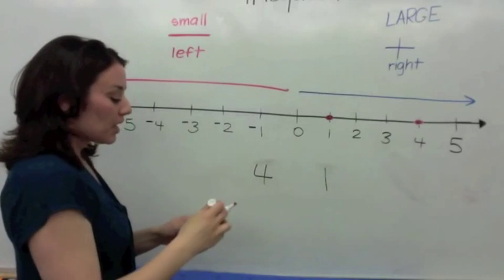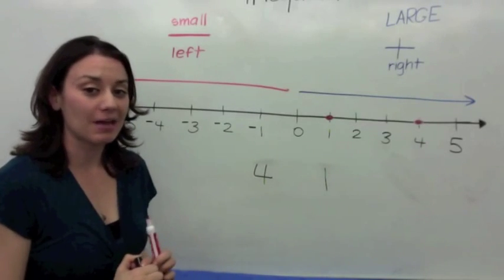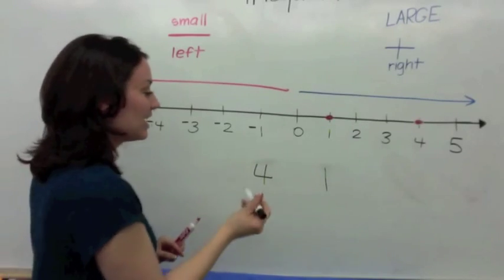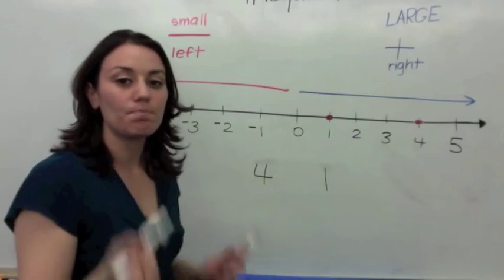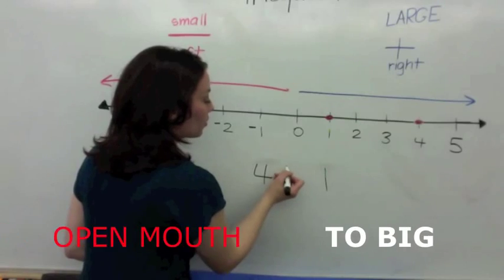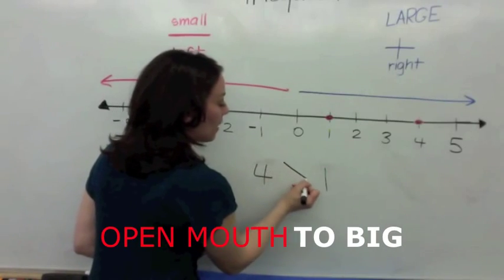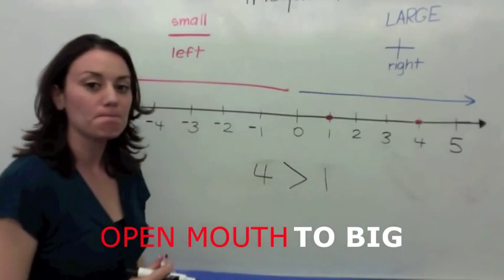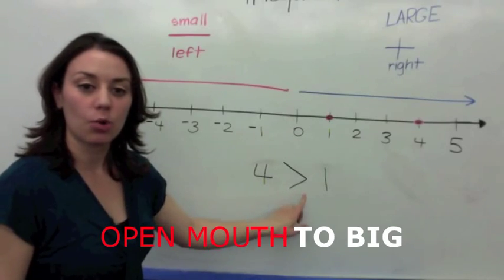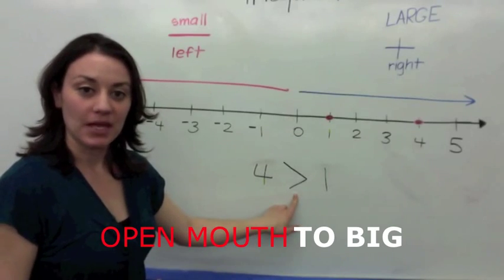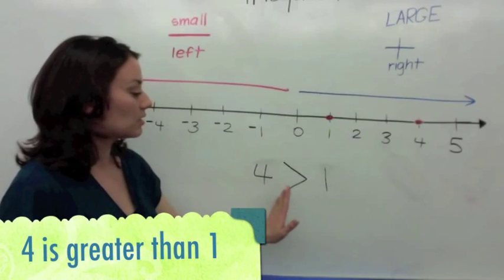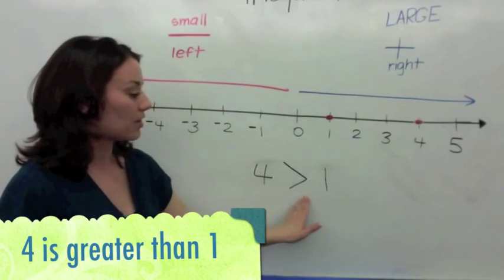So, if you have a hungry Pac-Man or alligator, they want to eat the biggest number — the biggest value — which is 4. You're going to open your mouth towards the 4. This symbol is called an inequality. It says 4 is more than 1.